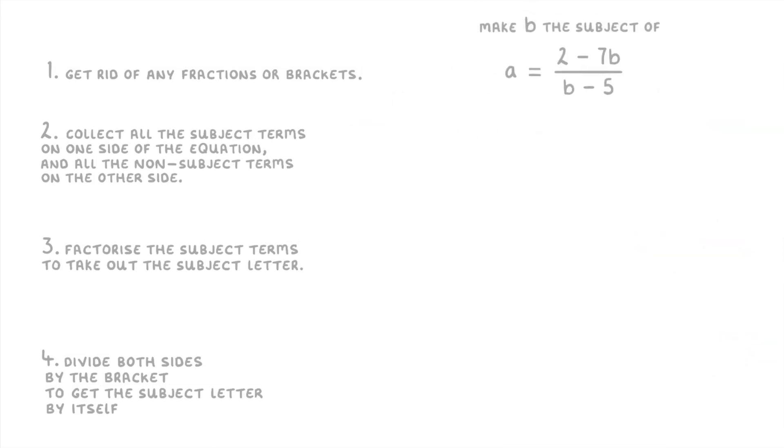Let's try one more using the same steps from before. In this one we're trying to make b the subject, so we want to end up with b equals something. Just like before, the first step is to get rid of any fractions or brackets, and this time we only have a fraction. So to get rid of the divided by b minus 5 part we need to multiply both sides by b minus 5.